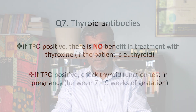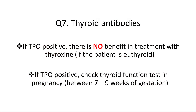Question 7: How should you manage a woman with thyroid antibodies? There is no need for thyroxine treatment in women with thyroid antibodies who are euthyroid — the large TABLET trial found absolutely no increase in live birth rate when levothyroxine was given to euthyroid women with thyroid antibodies. However, women with thyroid antibodies should be tested in early pregnancy, around 7–9 weeks, to check for thyroid dysfunction, as they are more likely to develop it during pregnancy.